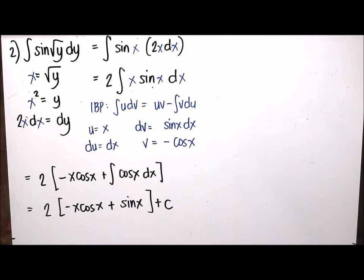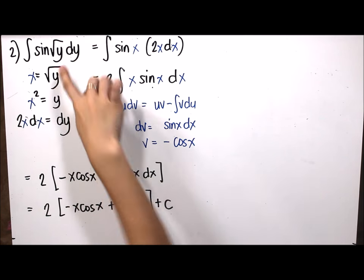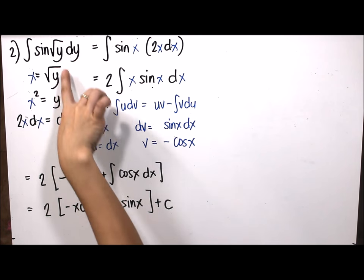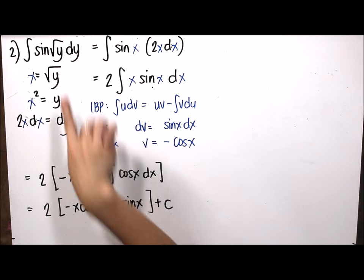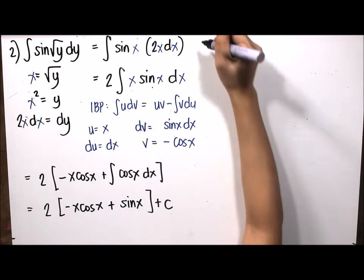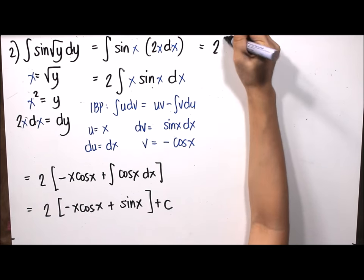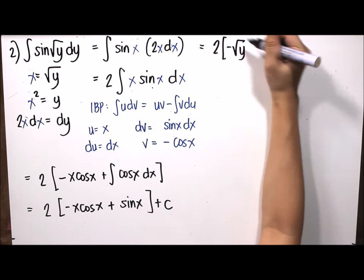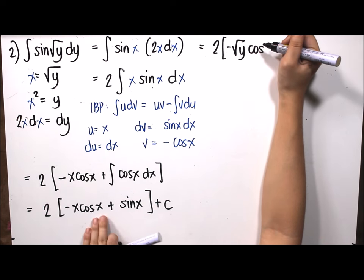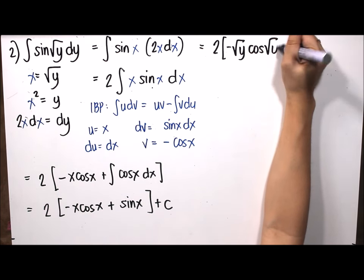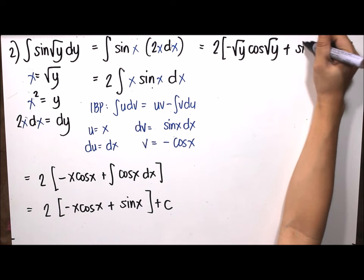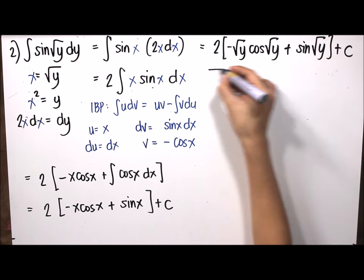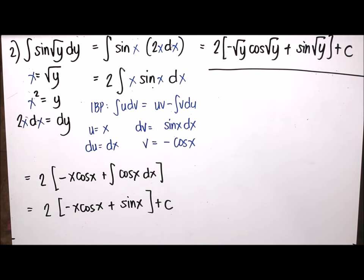The result simplifies to 2 times negative x cosine(x) plus sine(x), plus C. Since the original given was a function of y, we substitute back x equals square root of y. The final answer is 2 times negative square root of y times cosine(√y) plus sine(√y), plus C.